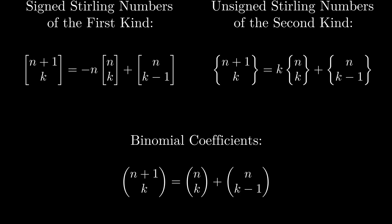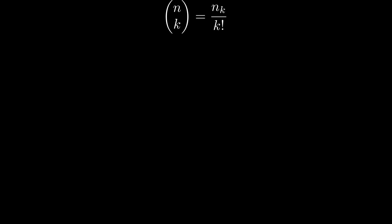These kinds of relationships are at the heart of umbral calculus. These sequences and their combinatorics deserve a video all of their own, but for now we only need one formula: n choose k equals n to the falling k over k factorial.